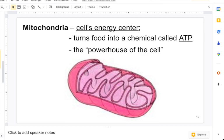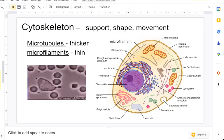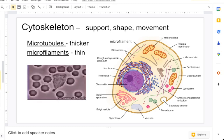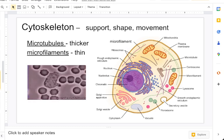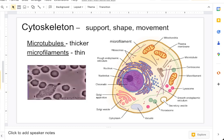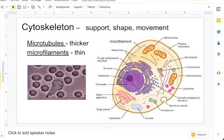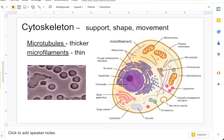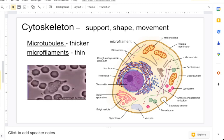The cytoplasm is the jelly-like substance that is going to help suspend the intracellular organelles. Let's talk about the cytoskeleton. The cytoskeleton is going to be the external structure of the cell, and it helps have the cell's shape and helps have a function and movement.